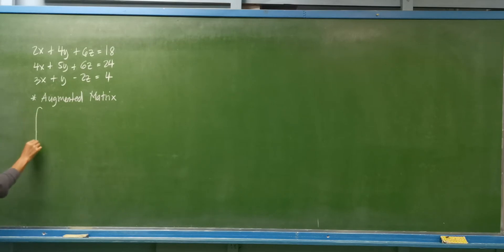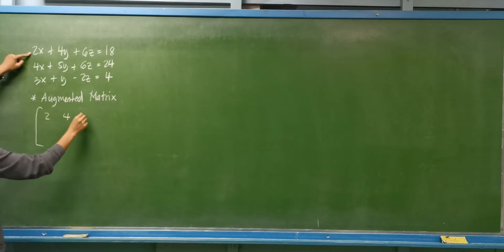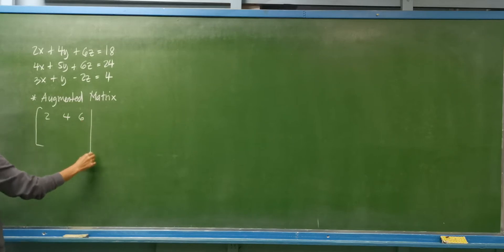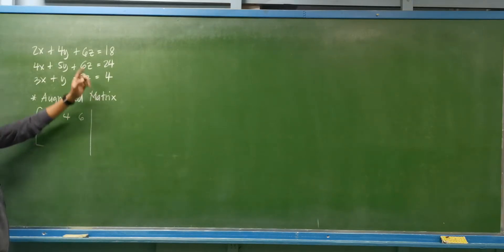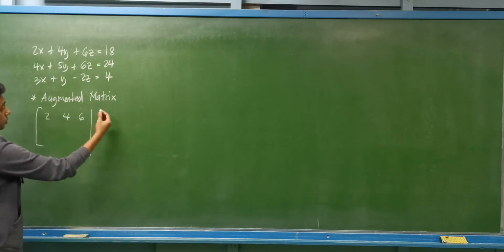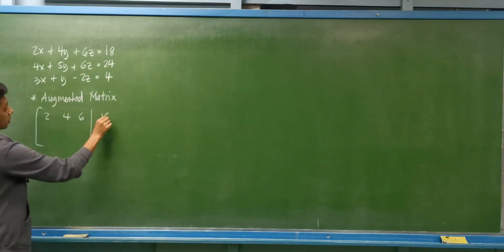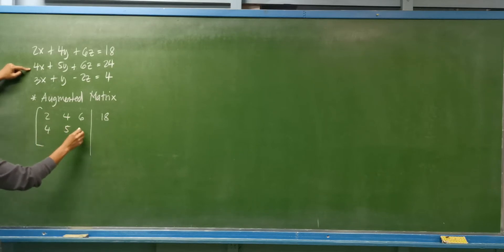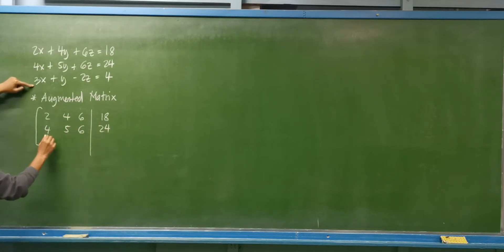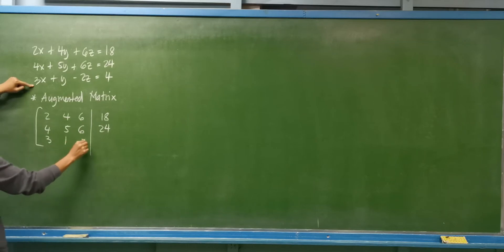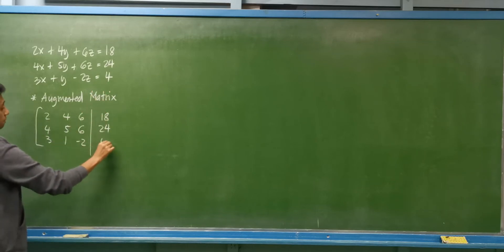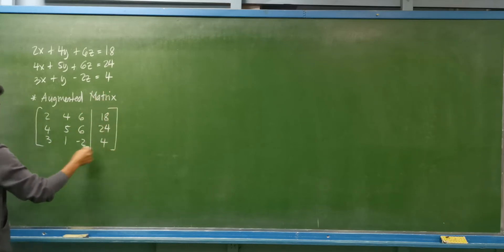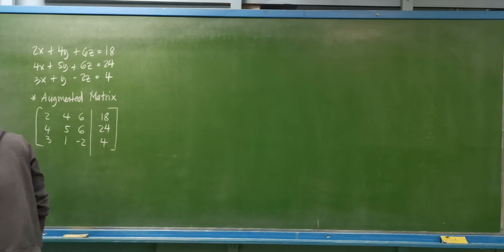We have the augmented matrix. Let's have the coefficients: 2, 4, 6. We separate the coefficients by a vertical line, with the constants on the right side of the equation — this is 18. On the second equation we have 4, 5, 6, 24. The third row is 3, 1, negative 2, then positive 4. This is the equivalent augmented matrix.